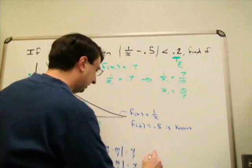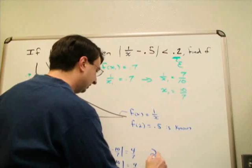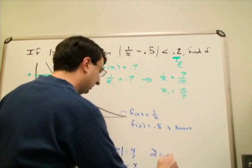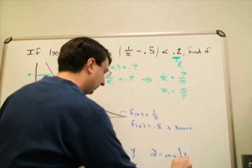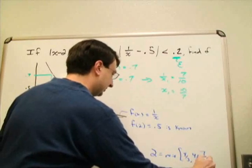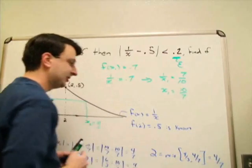I'm always going to pick delta to be the smaller of these numbers. So delta here is going to be the minimum of 4/3 and 4/7. In this case, that's 4/7 as an answer.